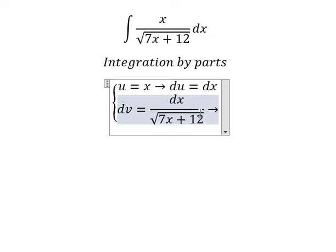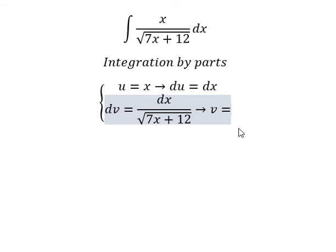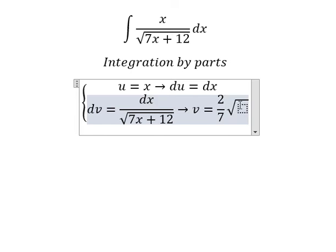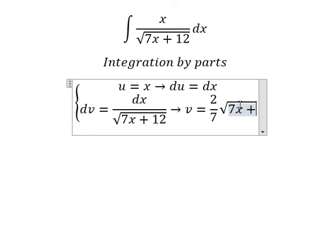So the integration of this one, we have v equals 2 over 7 times the square root of 7x plus 12.